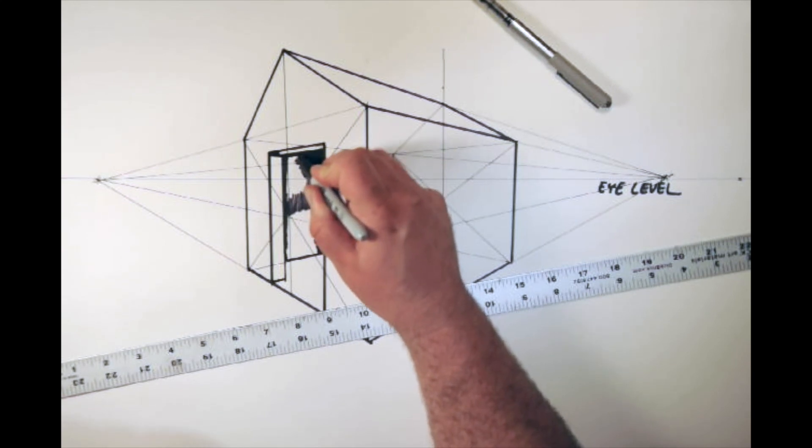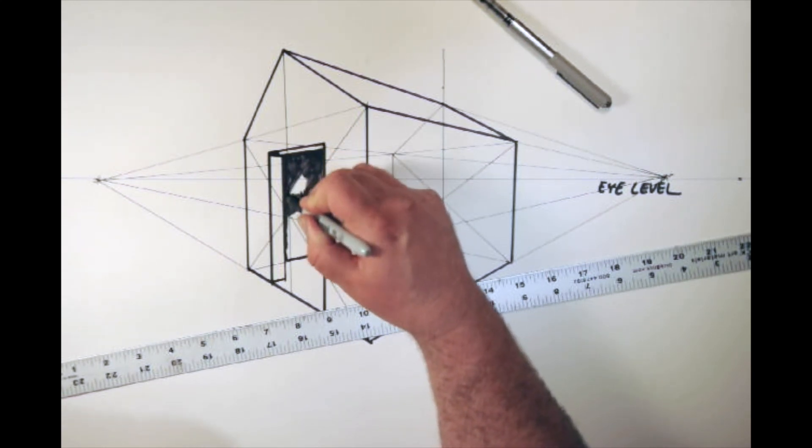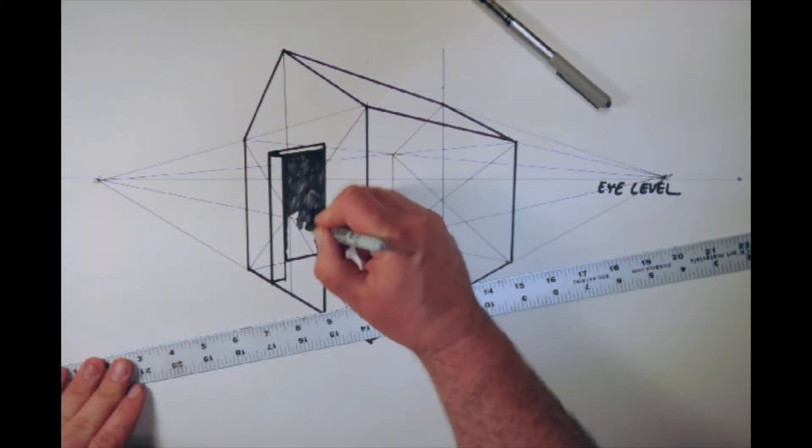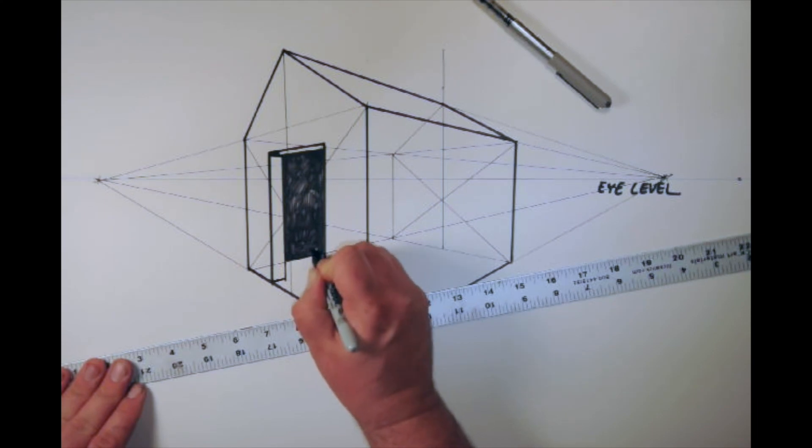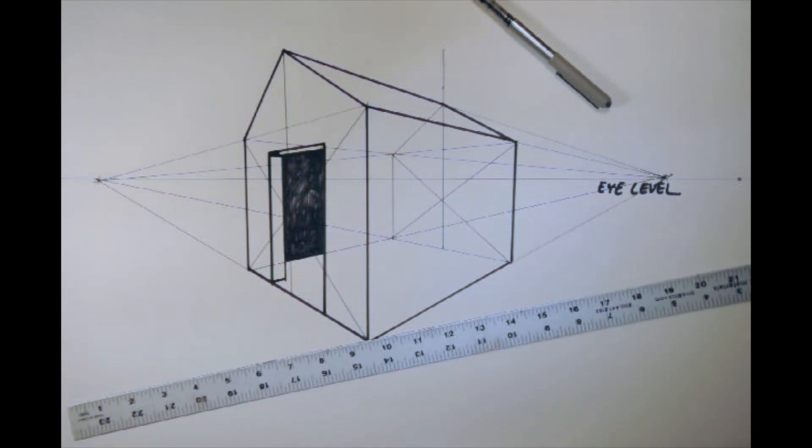Oh, my marker is going a little dry. Hopefully this will help you see what that looks like. And so we have our little open doorway into the house.